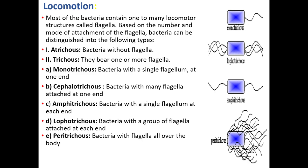Monotrichous bacteria have a single flagellum at one end. Cephalotrichous bacteria have many flagella attached at one end. Similarly, amphitrichous bacteria have a single flagella but that is present at both ends. Here you can see the amphitrichous bacteria.